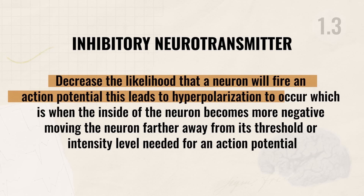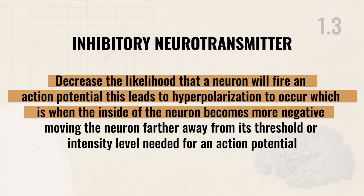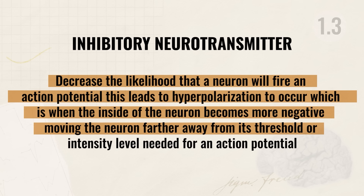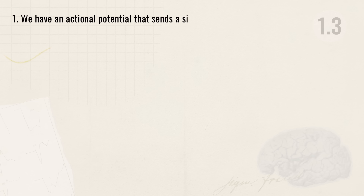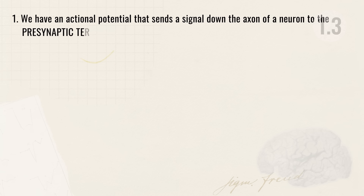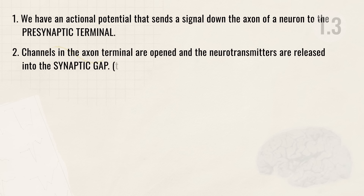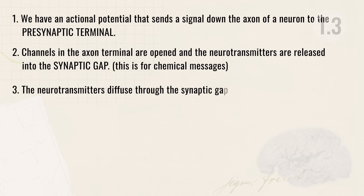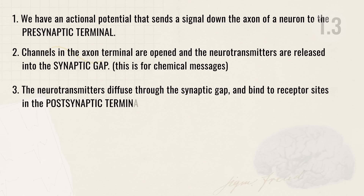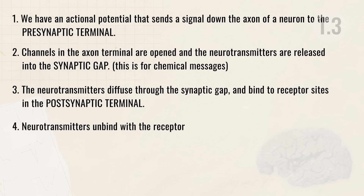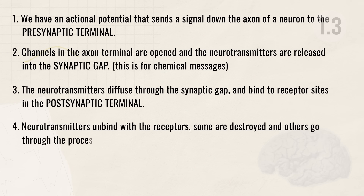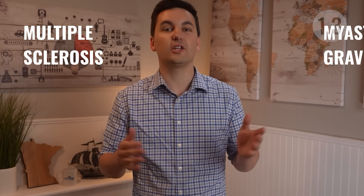Once neurotransmitters pass their message onto the postsynaptic neuron, they unbind with the receptors. Some neurotransmitters are destroyed and others get reabsorbed through a process called reuptake, where the sending neuron reabsorbs the extra neurotransmitters. If this process gets disrupted, it can lead to neurological disorders such as multiple sclerosis, which occurs when the myelin sheath is damaged and disrupts the transmission of electrical signals, causing muscle weakness and coordination problems.